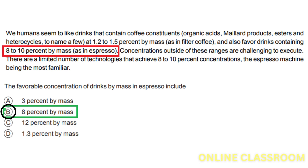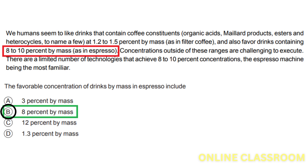The espresso machine is the most familiar technology that achieves 8-10% concentrations. Option A, 3% by mass, is incorrect. The paragraph states that humans favor drinks containing 8-10% by mass in espresso, not 3%.